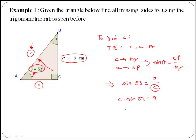And then to get c by itself, we just divide by sine of 53 in both sides of the equation. So we have c is equal to 9 over sine of 53. If we just type 9 over sine of 53 in the calculator, we get that c is 11.26 centimeters.